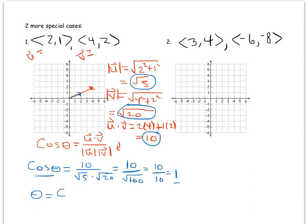The angle equals cosine inverse of 1, which is 0 degrees — and that's precisely what we saw in the graph. When this happens, we say the vectors are parallel. It's a strange word since they're on top of each other, but remember vectors aren't fixed in any place in the plane — to be parallel just means they're facing the same direction.